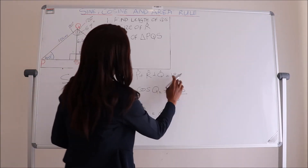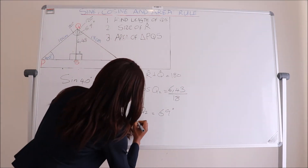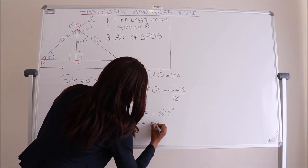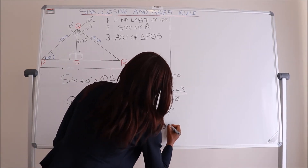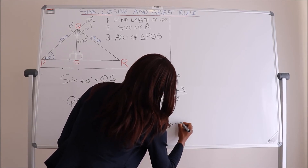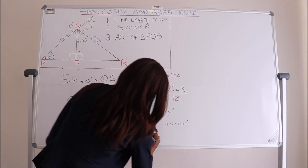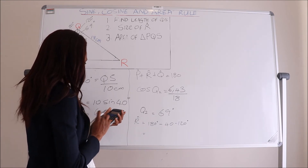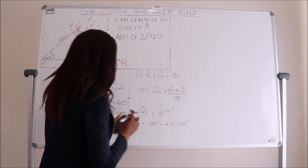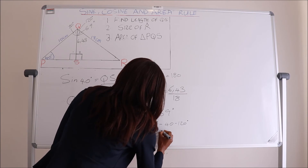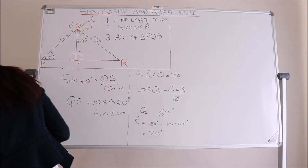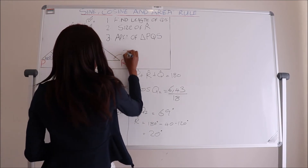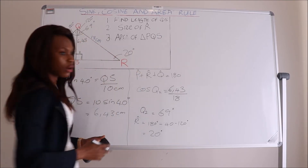Going back to find angle R: R = 180 − P − Q = 180 − 40 − 120, which gives 20 degrees. That is angle R equals 20 degrees.